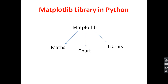In Matplotlib, M-A-T stands for math. In mathematics, numbers are present. P-L-O-T stands for chart — we have to represent the numbers in mathematics by using a chart. L-I-B stands for library. We have to use one library for representing the numbers of mathematics by using a chart. For that purpose, we have to use Matplotlib library. Matplotlib library is one of the most important and powerful libraries in Python.